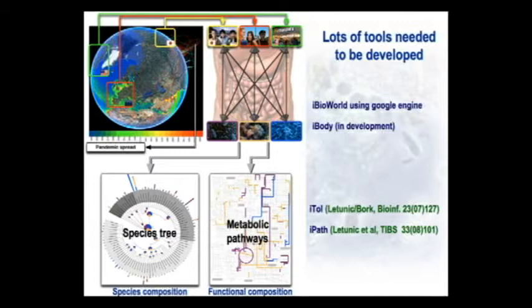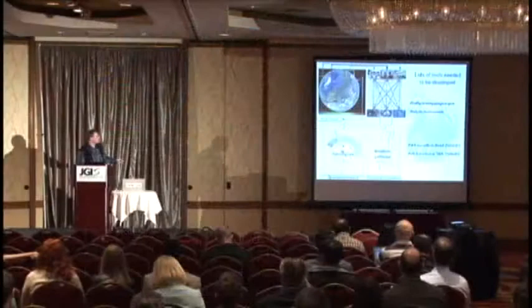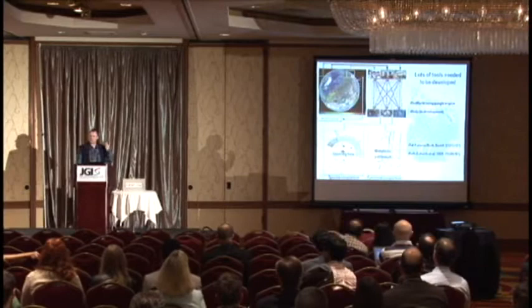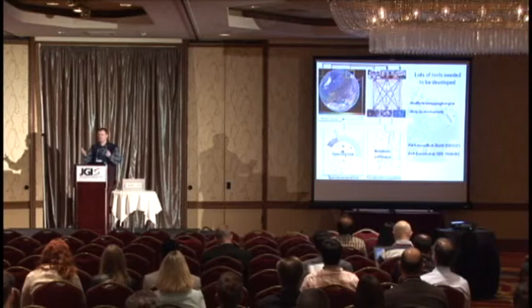I would draw attention to two tools we have. iPaaS allows you to map your data on metabolic pathways and visualize where differences are. ITOL is a species tree tool where you can map species information — even via genes — onto the tree, giving you some idea of what's in your sample. Those kinds of tools took a long time to develop.